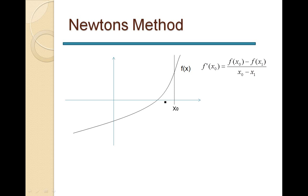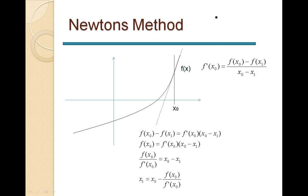If you look at the function value of the new x₁ value you get on the x-axis, it would have a function value of zero. So if we take this as given, we can write down: f'(x₀) equals f(x₀) minus f(x₁) — this becomes zero because we chose it so — divided by x₀ minus x₁. This is the slope, and the value of x₁ at the intersection equals zero.